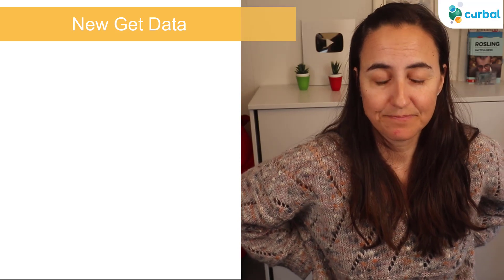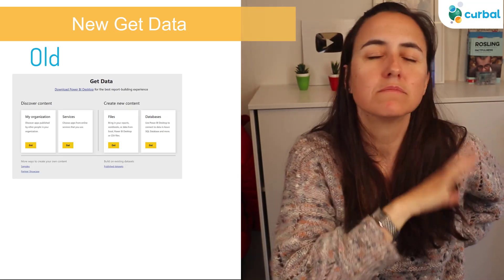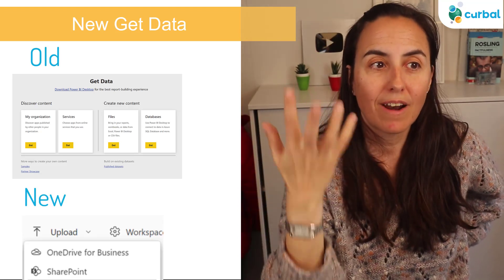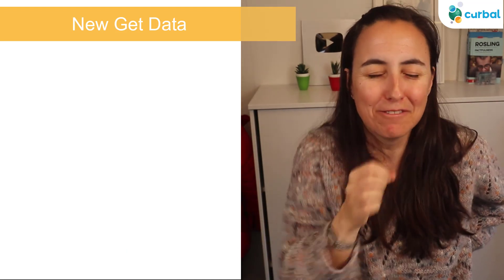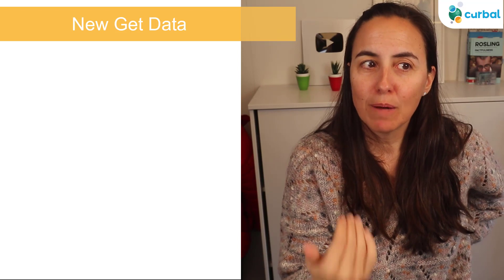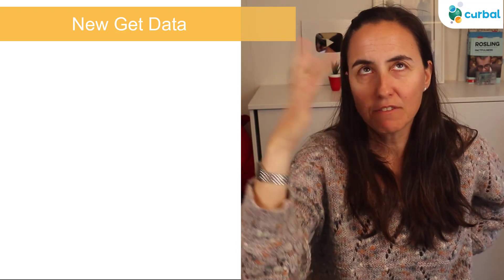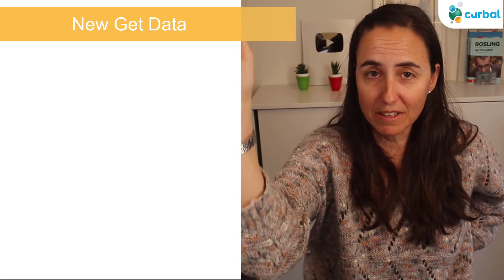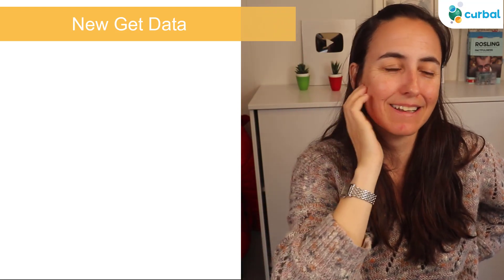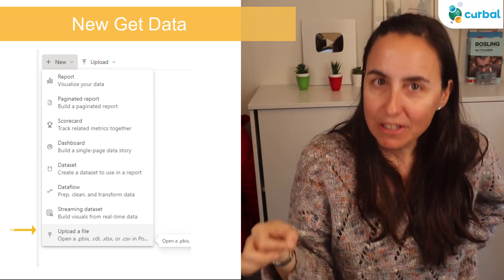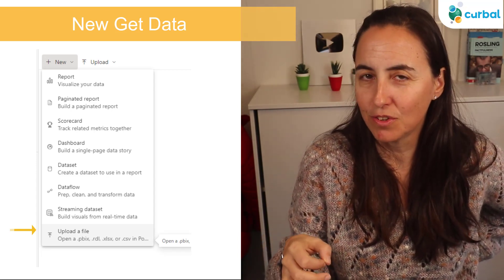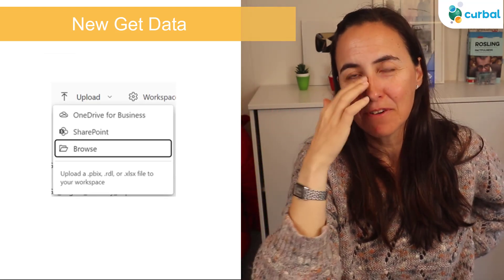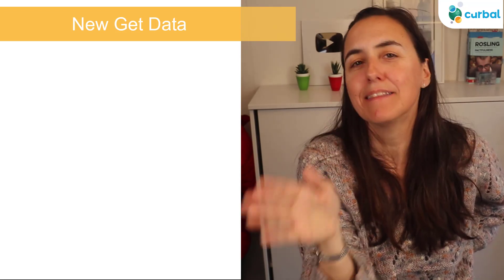Last but not least worth mentioning is the new Get Data experience. I think it's better overall — having it on the ribbon makes more sense and is more aligned with other Office products, so you find it more easily. But it is confusing. I was trying to upload a Power BI file — since I have many accounts and the login/logout experience in Power BI Desktop isn't there yet, I upload files to the Power BI tenant instead of publishing. I went to New and at the bottom it says Upload, but that does not actually upload a Power BI file even though it says so. You have to go to the Upload button and upload from there. It says New > Upload > PBIX and then all these options — it's very confusing. They need to improve that a bit, but it is a better experience overall.